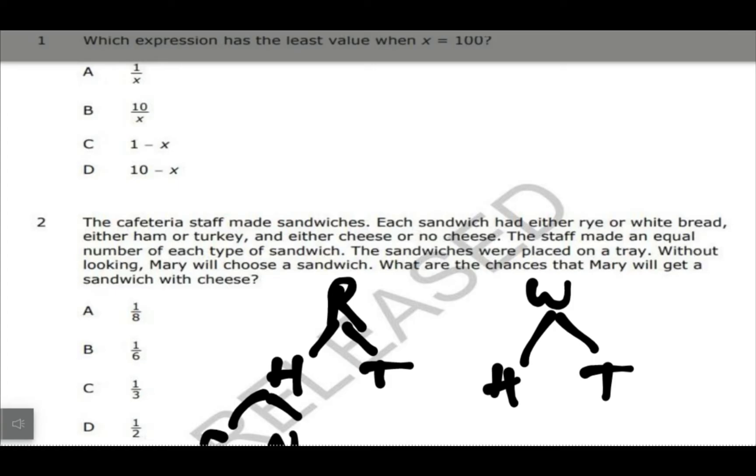And then they could either have cheese or no cheese, so I guess you could do cheese, no cheese, cheese, no cheese, cheese, no cheese for all of these. And then it says without looking, what's the chances that Mary will get a sandwich with cheese?